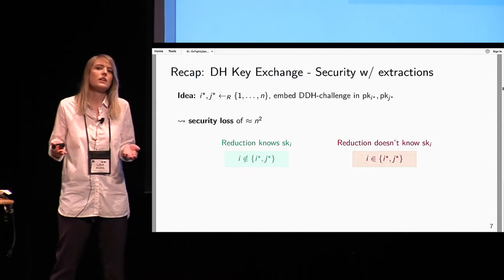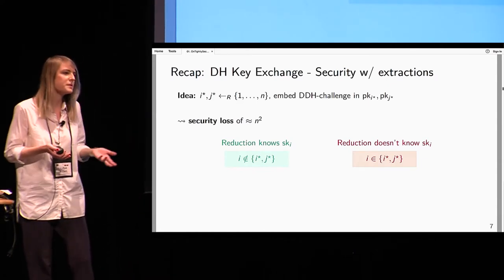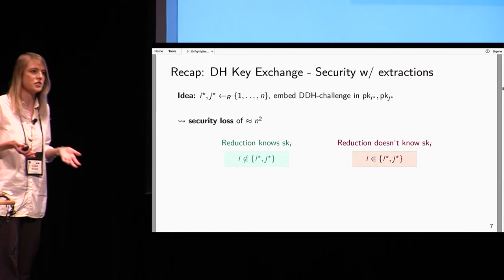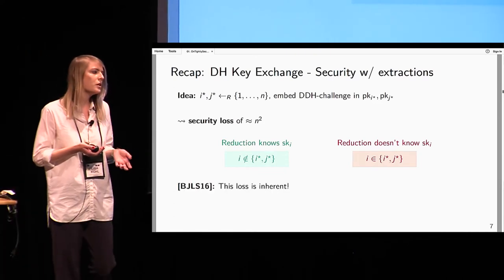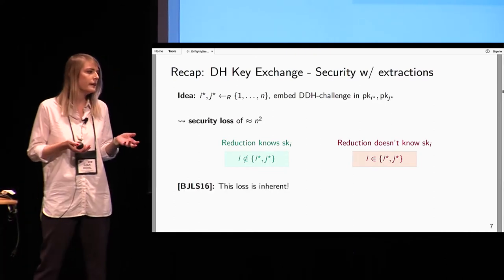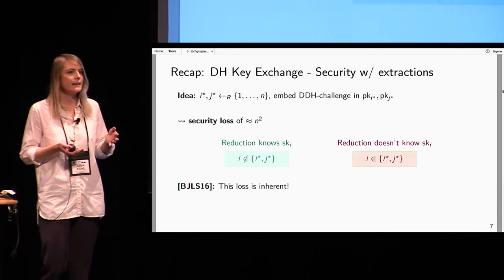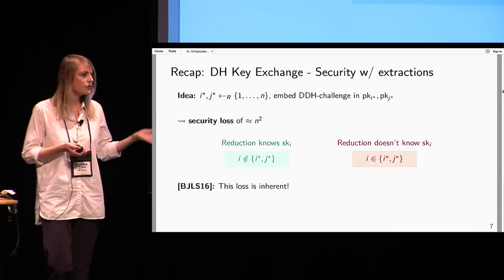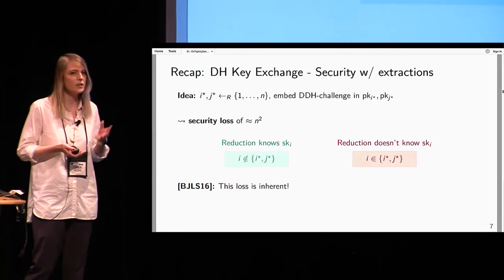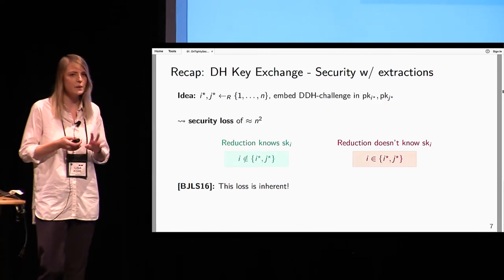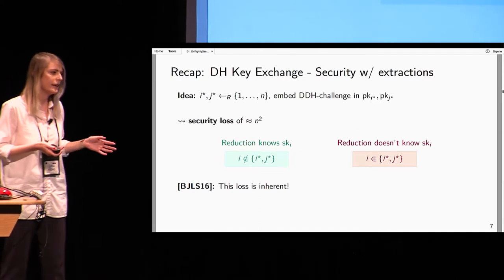Maybe this is just not a good reduction — perhaps there's a better one that proves DH tighter. But actually this is not true. Bader, Jager, Li, and Schäge proved in 2016 that for Diffie-Hellman key exchange this loss is inherent, and not only for DH but for a broad class of non-interactive key exchange schemes.